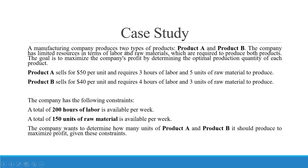A manufacturing company produces two types of products: Product A and Product B. The company has limited resources in terms of labor and raw materials required to produce both products. Product A sells for $50 per unit and requires three hours of labor and five units of raw material to produce. The company has a total of 200 hours of labor available per week and 150 units of raw material available per week.